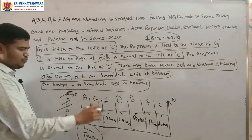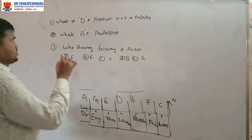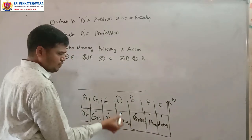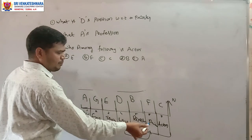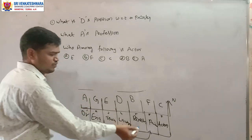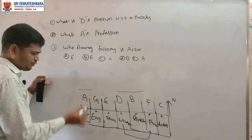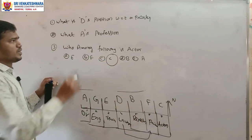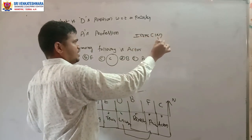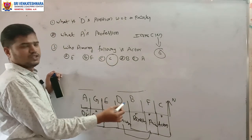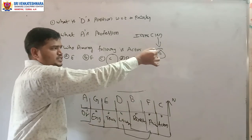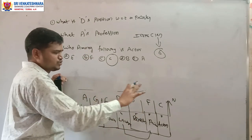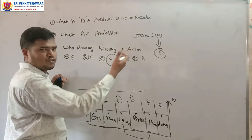From this question: What is D's position with respect to the painter? The painter is confirmed, and D is second to the left of the painter. What is A's profession? A is the doctor. Who among the following is the actor? C is the actor. IBPS Clerk gave six questions from this arrangement — once you derive the full table, you can answer all six or even ten questions easily.